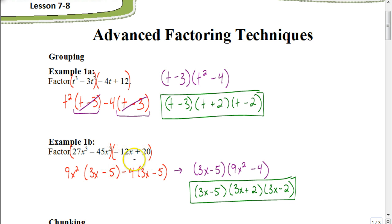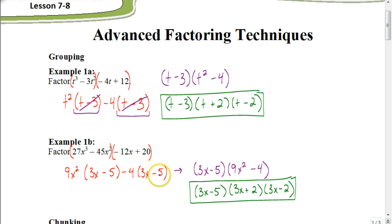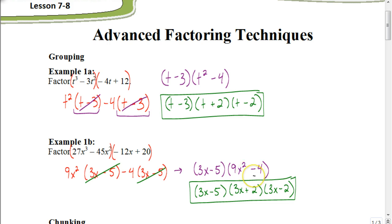Now look at the next set of parentheses. Since we start out with a minus, we have to factor out a minus. Between 12 and 20, the greatest common factor is 4, so I factor out negative 4. Negative 12 divided by negative 4 is positive 3, giving 3x, and 20 divided by negative 4 is negative 5. Notice that in parentheses we again have 3x minus 5. So we factor that out, and we're left with 9x squared minus 4 — giving us 3x minus 5 times 9x squared minus 4.